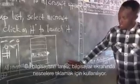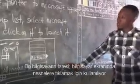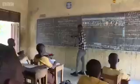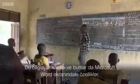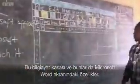This is a computer mouse. It's used for pointing to objects on the computer screen. This is the system you need. And this is the features of the Microsoft Word window.